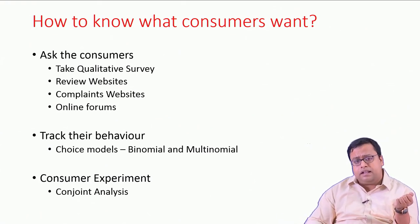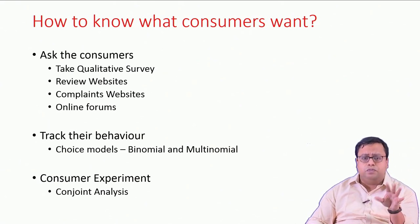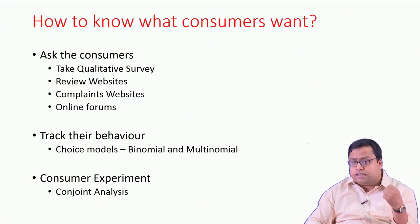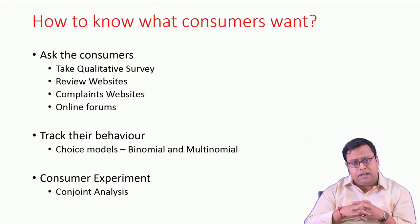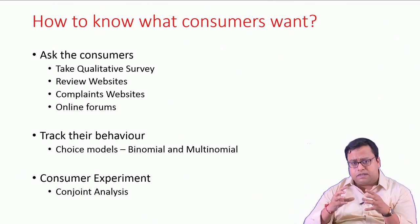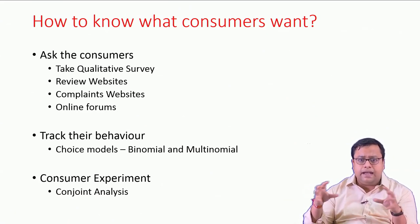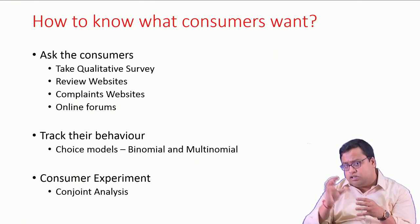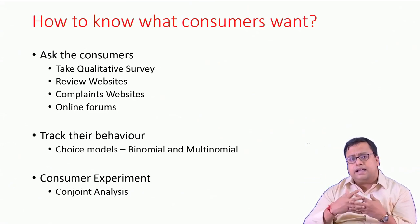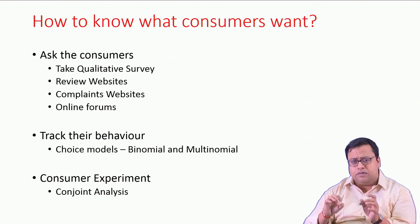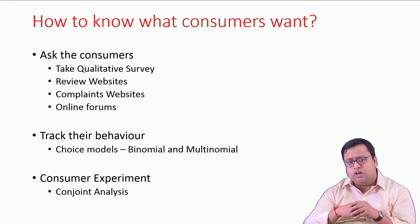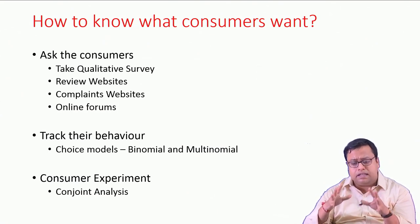Sometimes you do not ask directly — somebody else asks for you. For example, review websites like Amazon have all reviews listed there, sometimes from verified customers and sometimes from non-verified customers who bought from another source. That is also a major source of information. A product company can go through all those product reviews and get an idea of what things they should improve, what they are okay with, what has higher importance, and what has lower importance. We will also do a case study on the text part of reviews to find out what matters and what customers want.